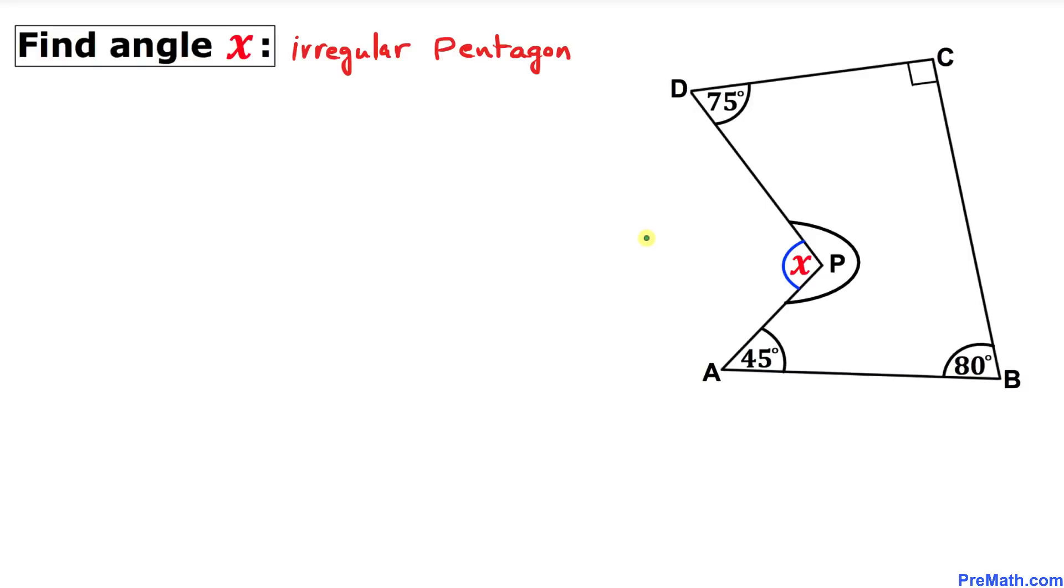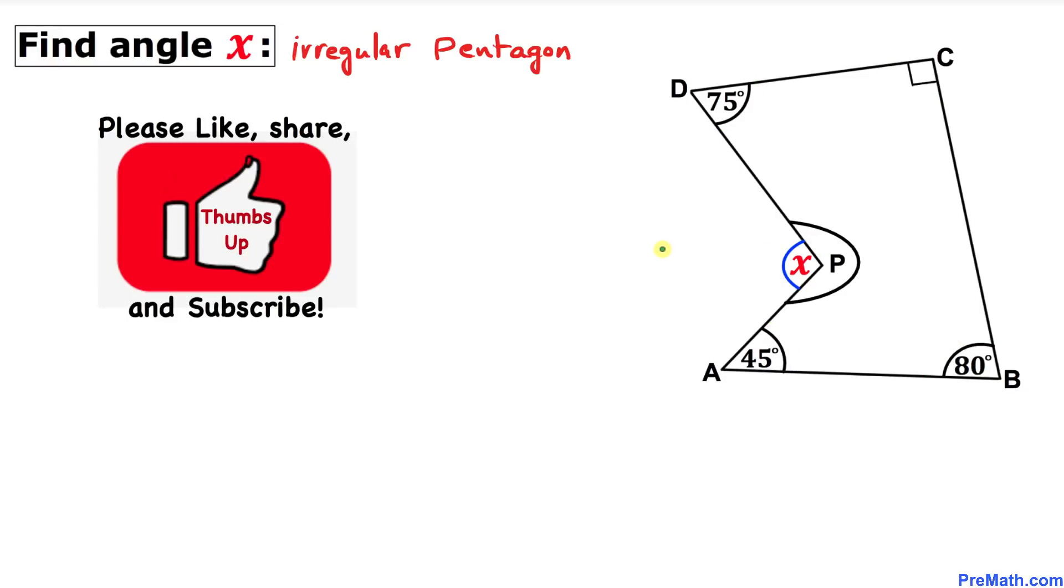Welcome to PreMath. In this video tutorial, we have an irregular pentagon ABCDP such that angle A is 45 degrees, angle B is 80 degrees, angle C is 90 degrees, and angle D is 75 degrees. We are going to calculate angle X.